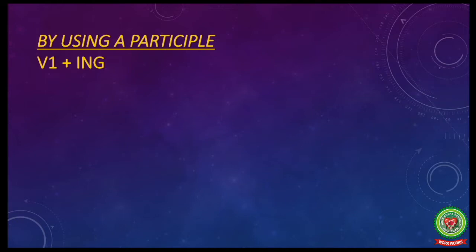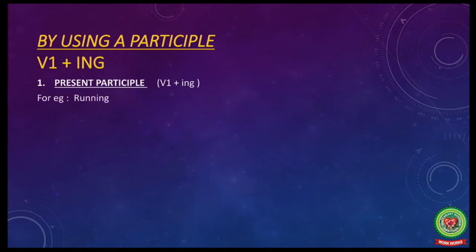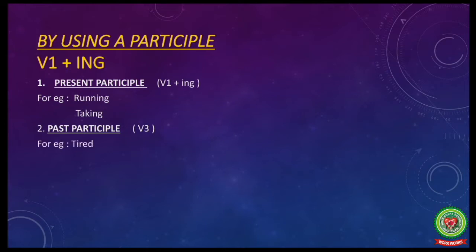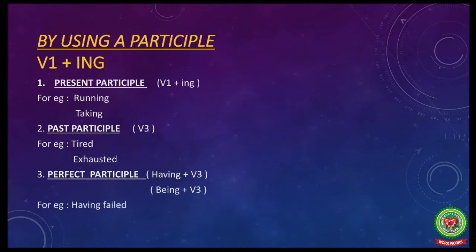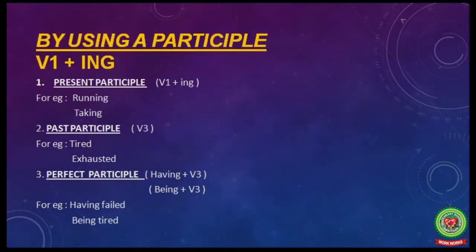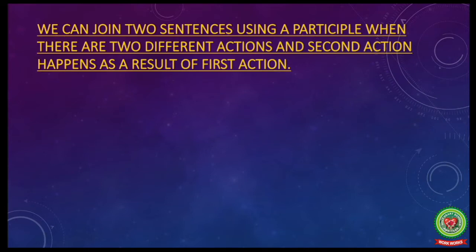You have already watched the video related to participles. Today we will combine two simple sentences into one using present participle, that is present form of verb plus -ing — for example, 'running,' 'taking.' Or we can use past participle, the third form of verb — for example, 'tired,' 'exhausted.' Or we can use perfect participle, that is 'having' plus past participle or 'being' plus past participle — for example, 'having failed,' 'being tired.' We can join two sentences using a participle when there are two different actions and the second action happens as a result of the first action — for example: 'He took his hat. He went out.'